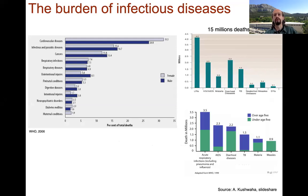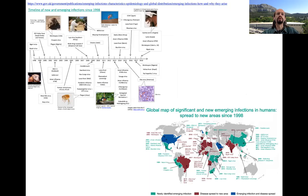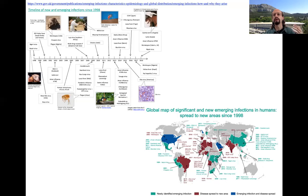Infectious disease is the second cause of death worldwide, and new emerging diseases appear regularly. This is data from the UK government, basically from the WHO. Recently we've seen Zika and Ebola, and also West Nile and chikungunya — diseases brought by mosquitoes whose habitat has expanded because of global warming, but which were already present in other countries.